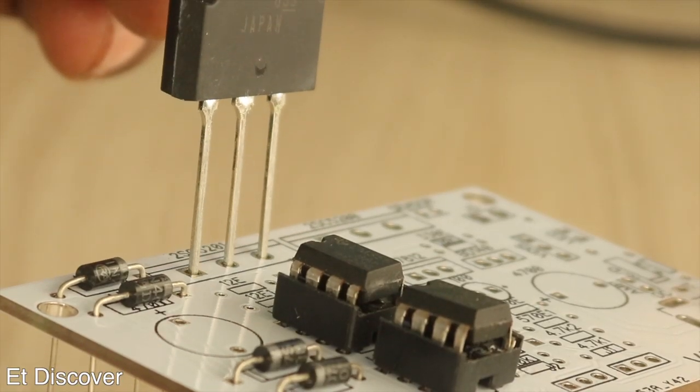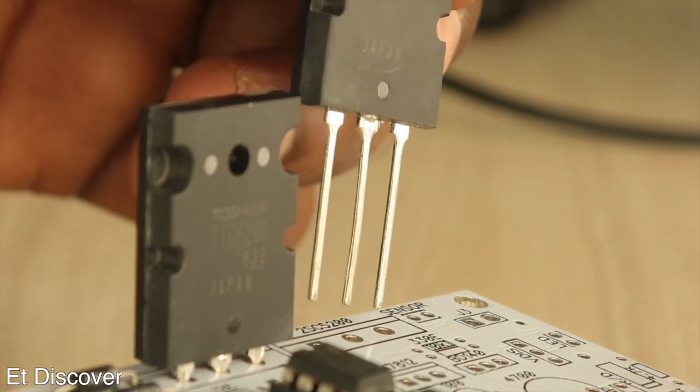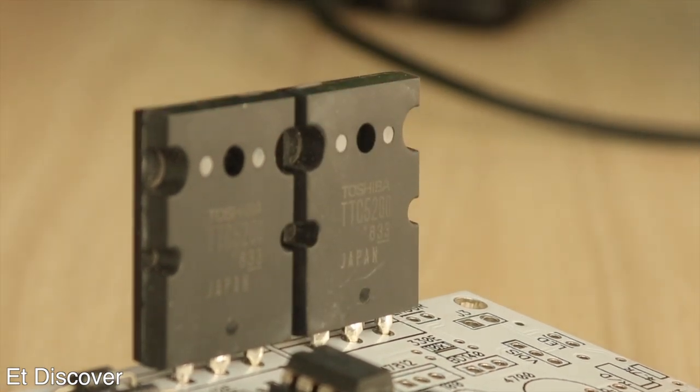The next step is the power driving section. Here I am using two 2S5200 power transistors. This is quite good to handle 25V 4A current.